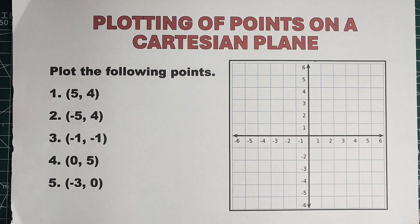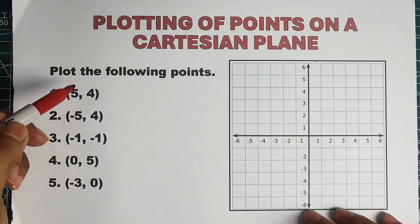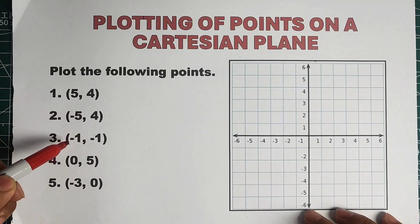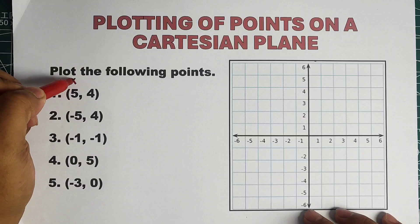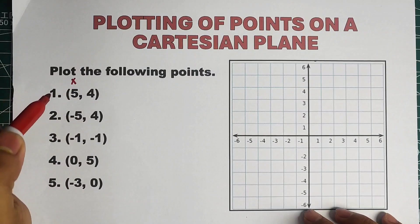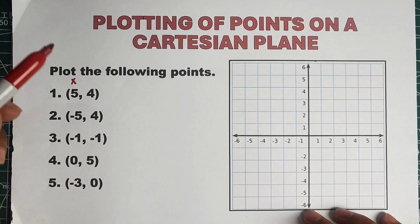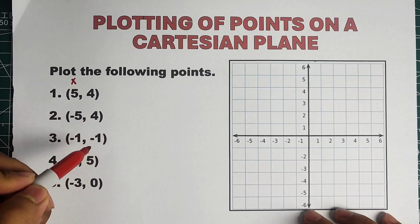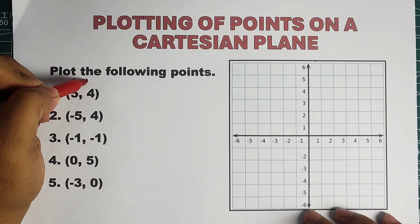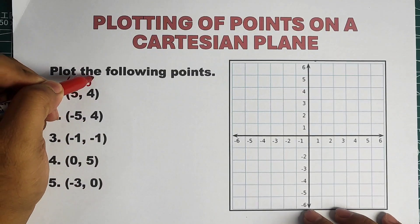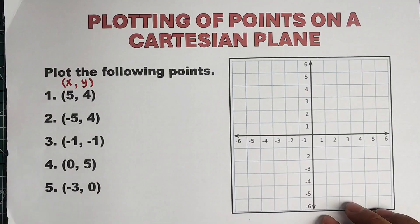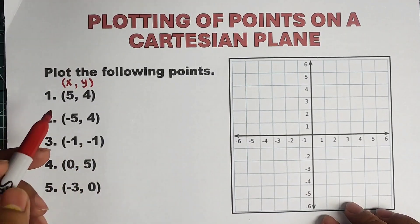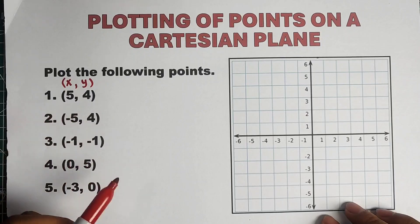Now let me tell you that these are examples of ordered pairs. So the numbers 5, negative 5, negative 1, 0, negative 3 are representing the x-coordinates. Now the 4, 4, negative 1, 5, 0 are representing the y-coordinates. Now the question here is: how are we going to plot the first point, 5, 4?